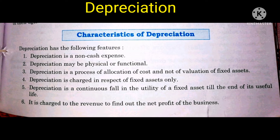For example, if an asset has a useful life of 5 years, we divide that asset value over 5 years. So depreciation is a process of allocation of cost and not of valuation of fixed assets. Fourth: depreciation is charged in respect of fixed assets only.